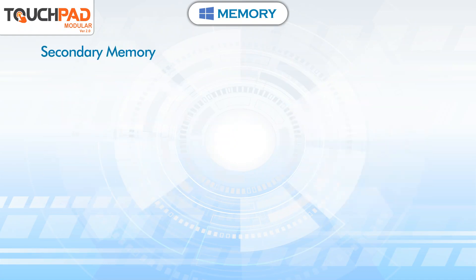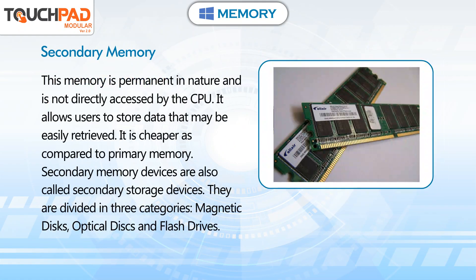Secondary memory. This memory is permanent in nature and is not directly accessed by the CPU. It allows users to store data that may be easily retrieved. It is cheaper as compared to primary memory. Secondary memory devices are also called secondary storage devices, and they are divided into three categories.